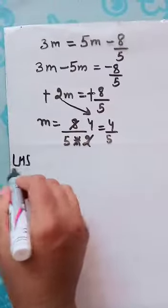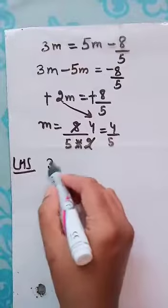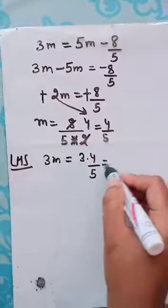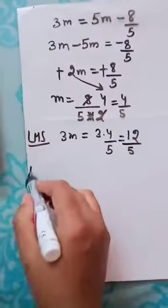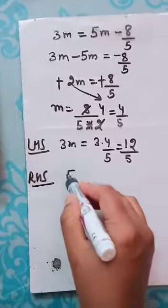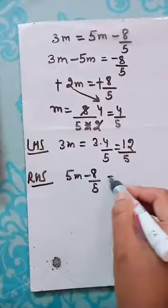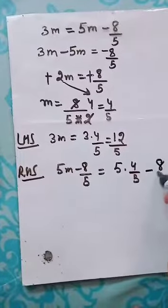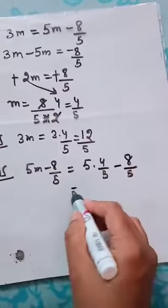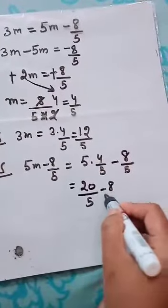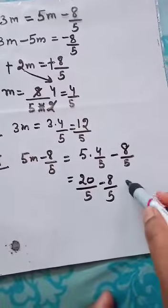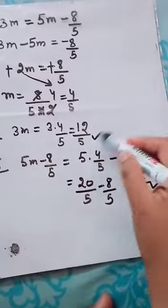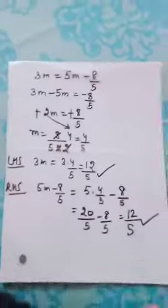Now LHS. Let's see whether whatever I have solved is correct or not. LHS is 3m. So 3m means 3 into 4 by 5. That means the answer is 12 by 5. Now see what is there in RHS. RHS is 5m minus 8 by 5. So 5 into m is 4 by 5 minus 8 by 5. So 5 fours are 20 divided by 5 minus 8 by 5. Why didn't I cut? Because I have to take the LCM. So 20 minus 8 is 12 by 5. Again, my LHS and RHS are same. Therefore my answer is correct.